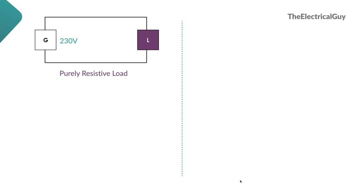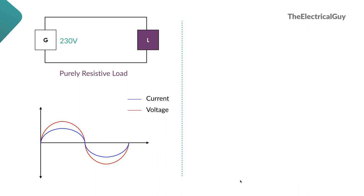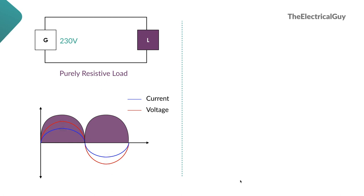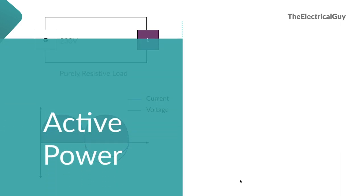Now let's look at a purely resistive circuit — we have connected the load to a 230-volt source. If we draw the voltage and current waveform, the voltage and current are in phase: they start at the same time, reach their peak at the same time, and become zero at the same time. At any given instant, when voltage is positive and current is positive, power is positive. When both are negative, negative multiplied by negative is also positive. So power in this circuit is always positive, and such power is called active power.